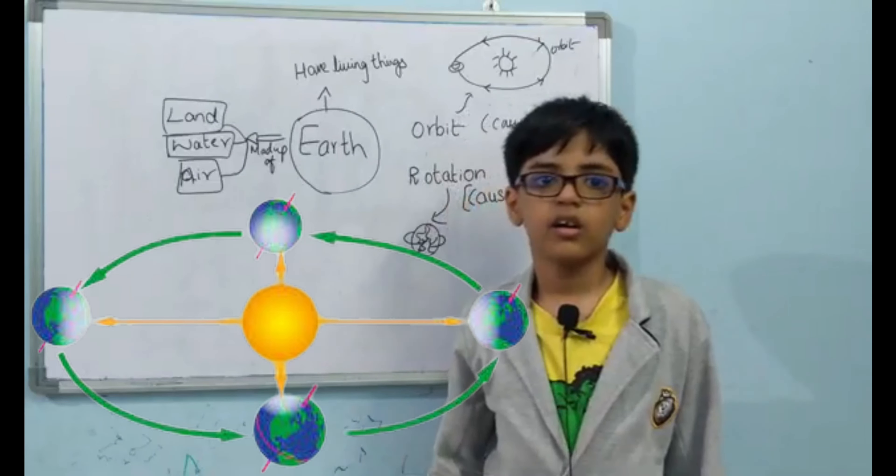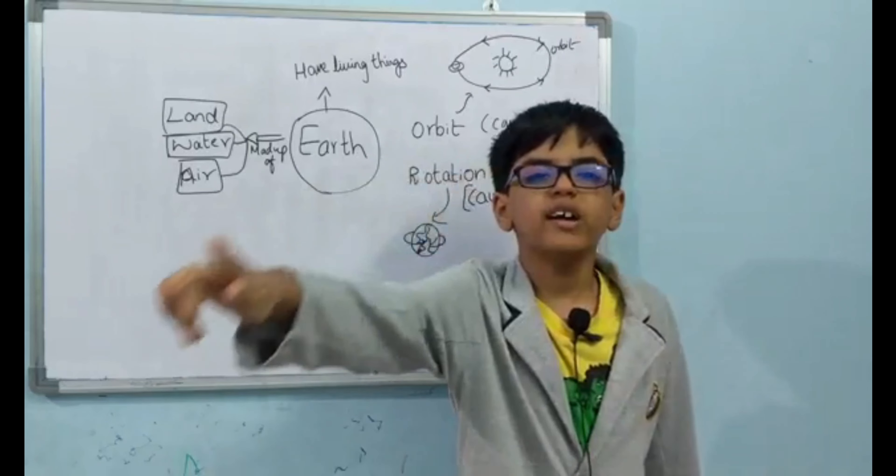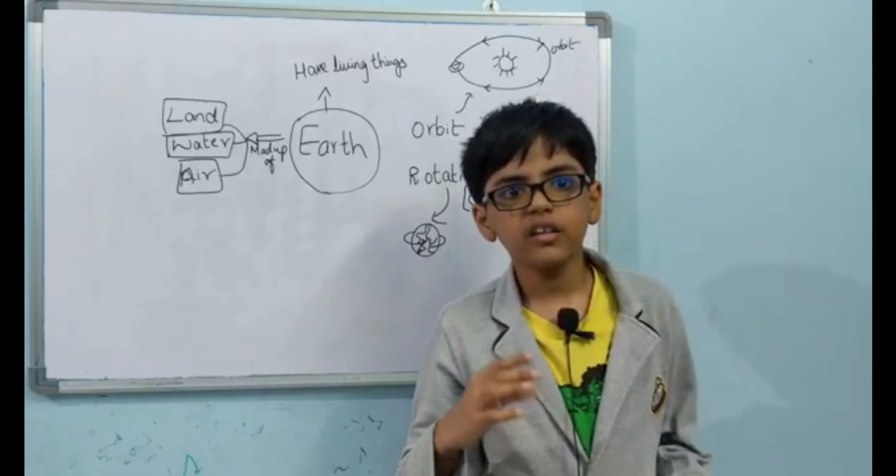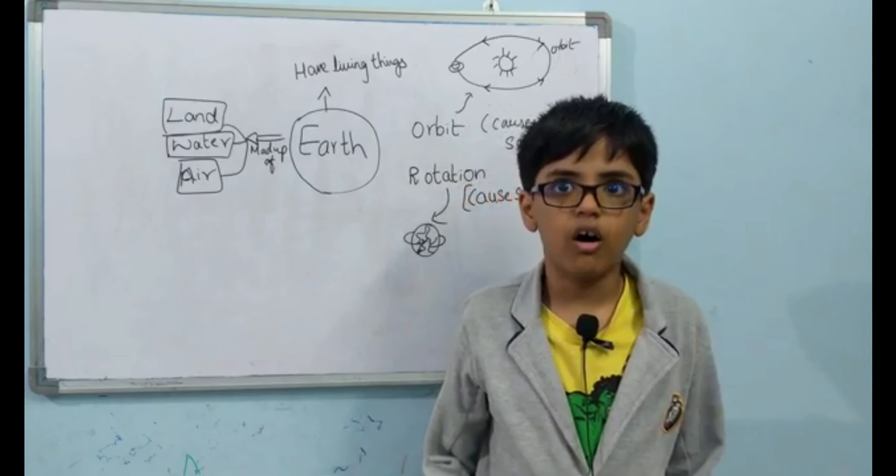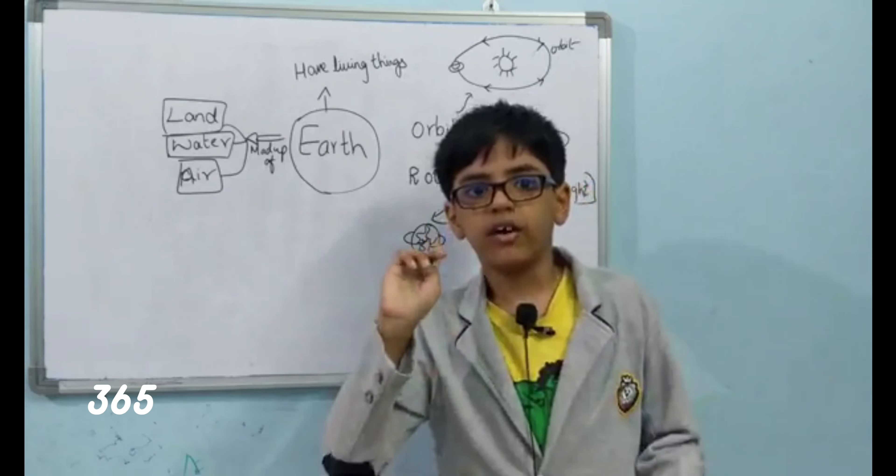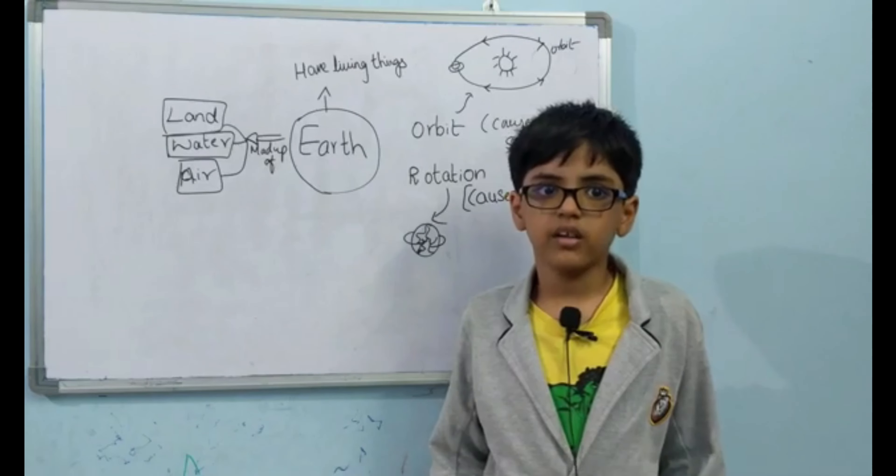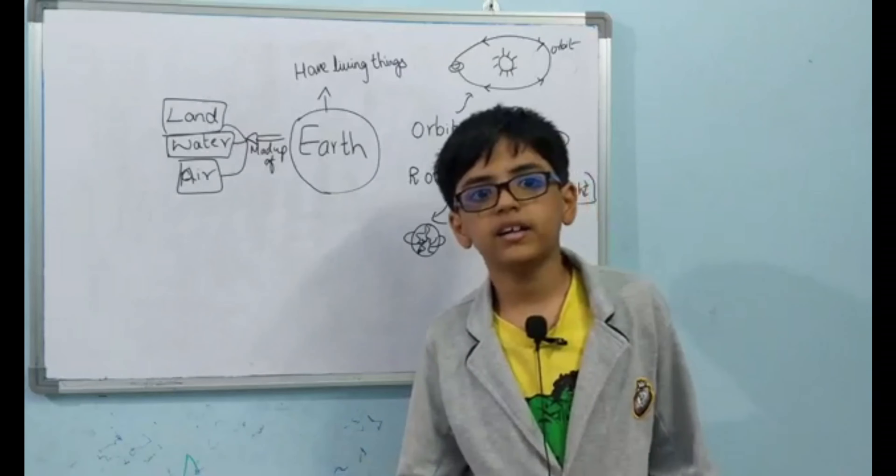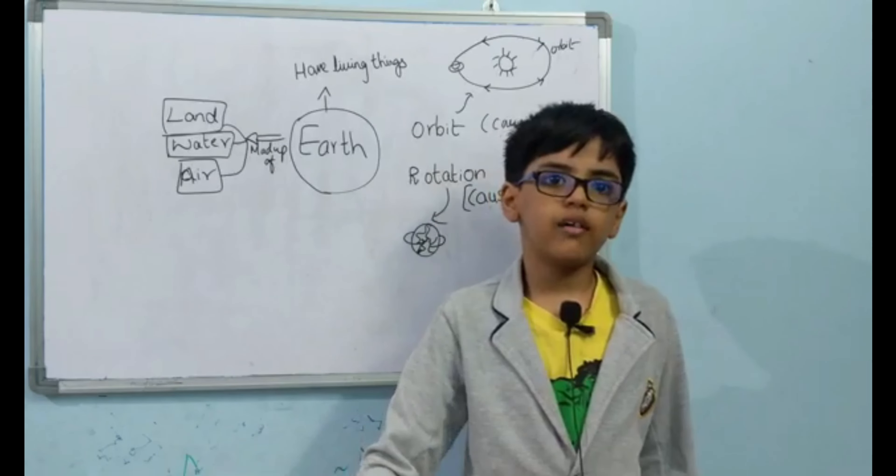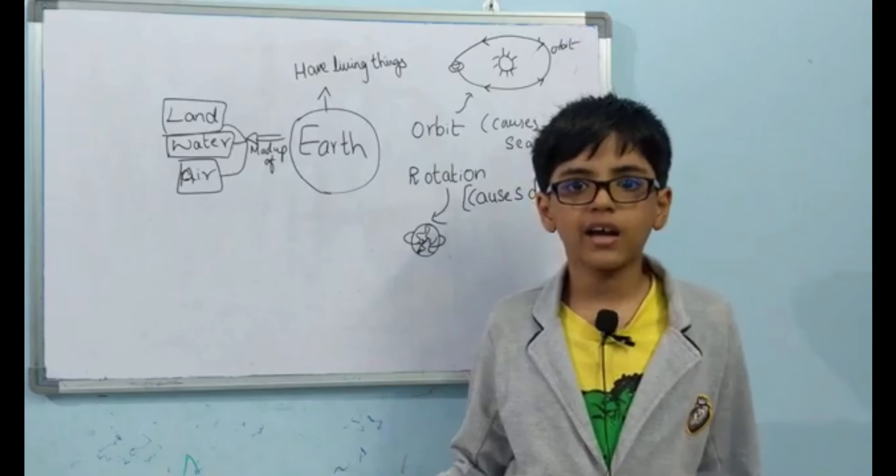When the Earth is moving around the sun, which is orbit, it is called revolution of the Earth. It takes one year, which is 365 days, one fourth days to complete one revolution of the Earth. By the time of the Earth's revolution, seasons are caused by Earth's axis.